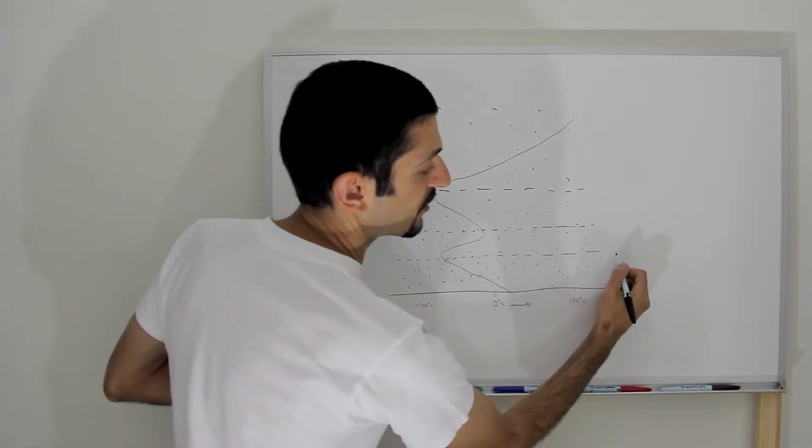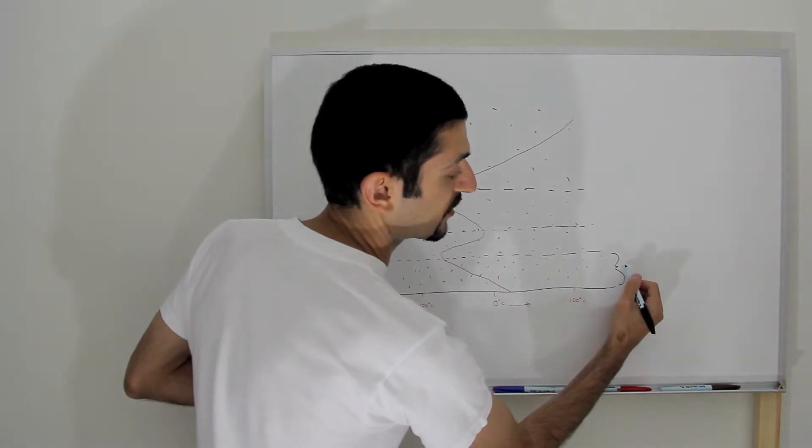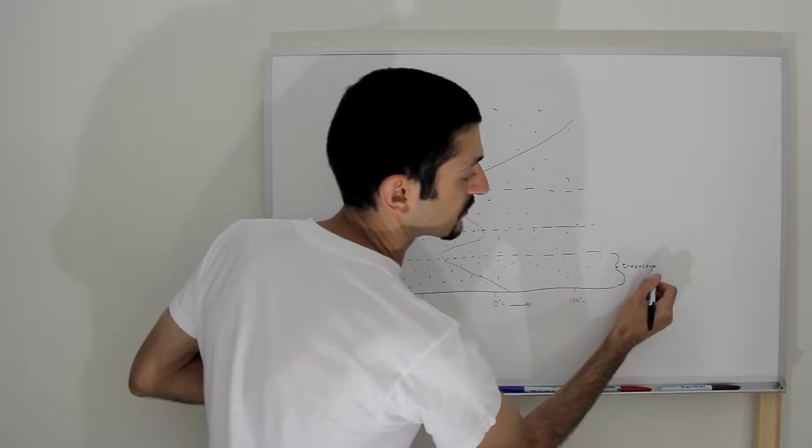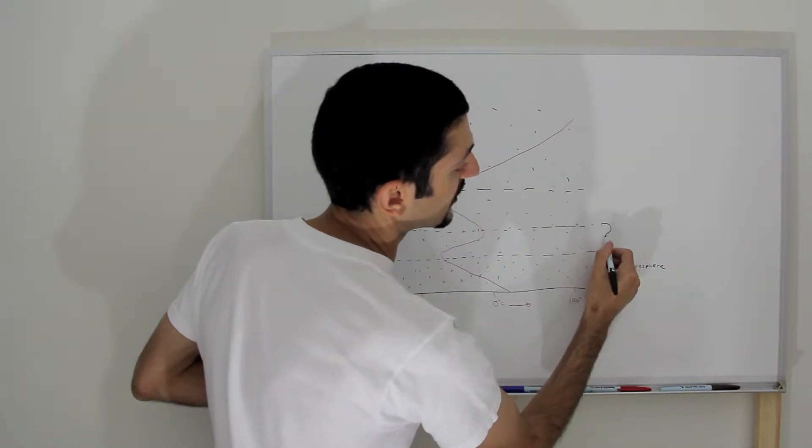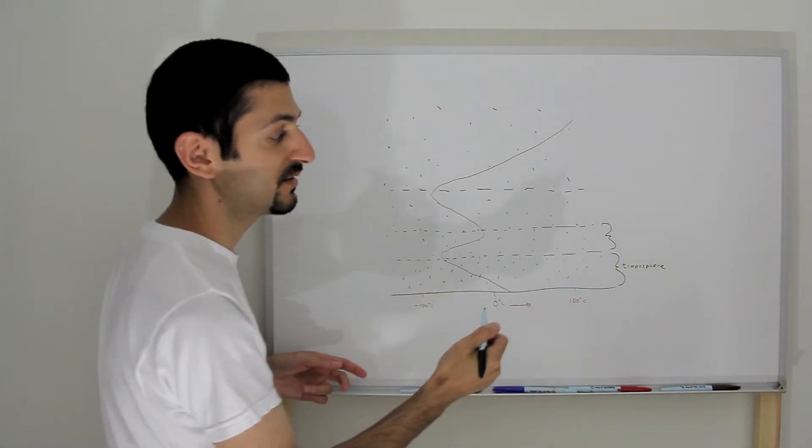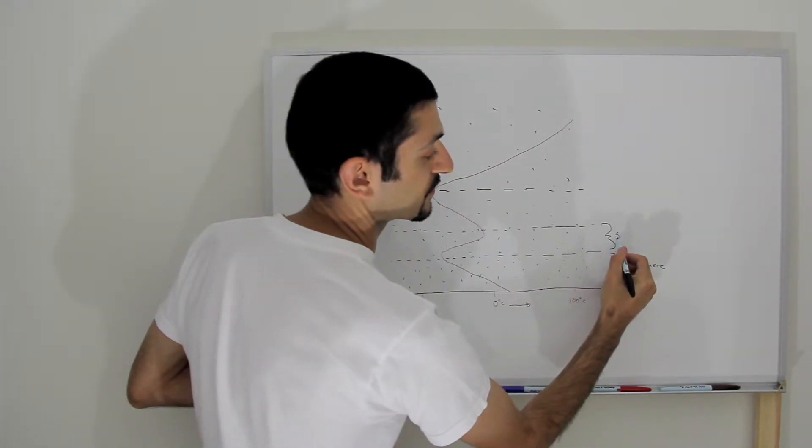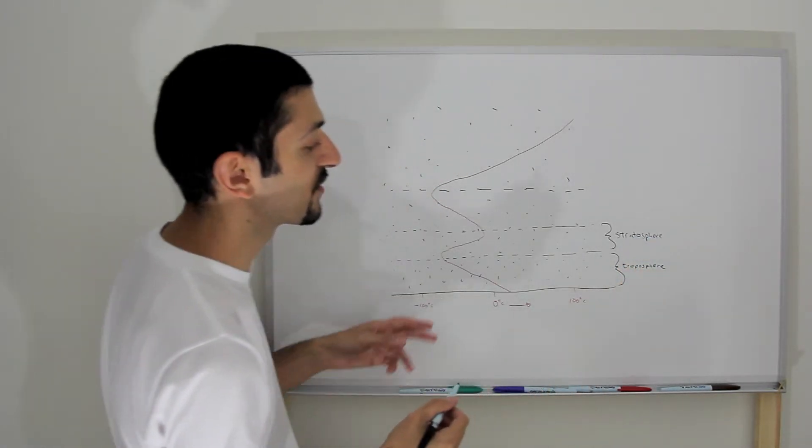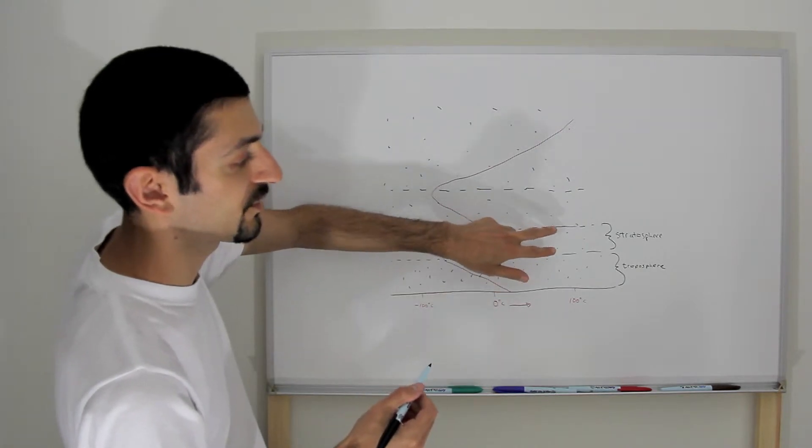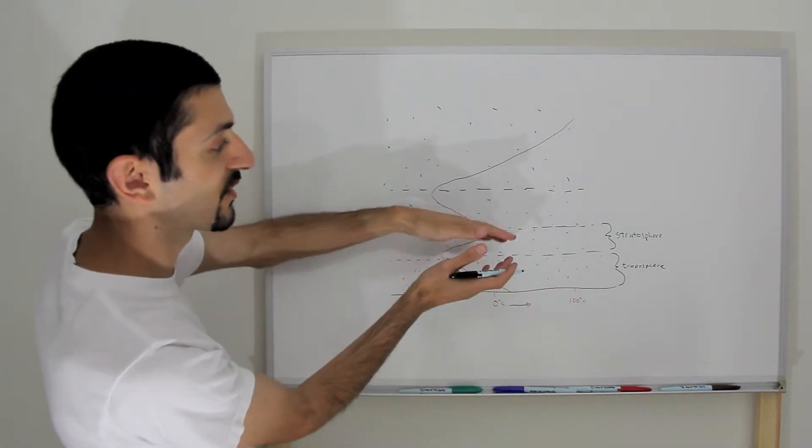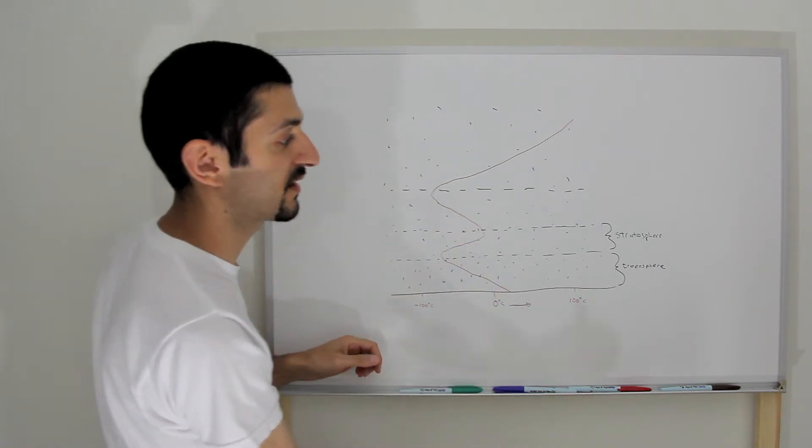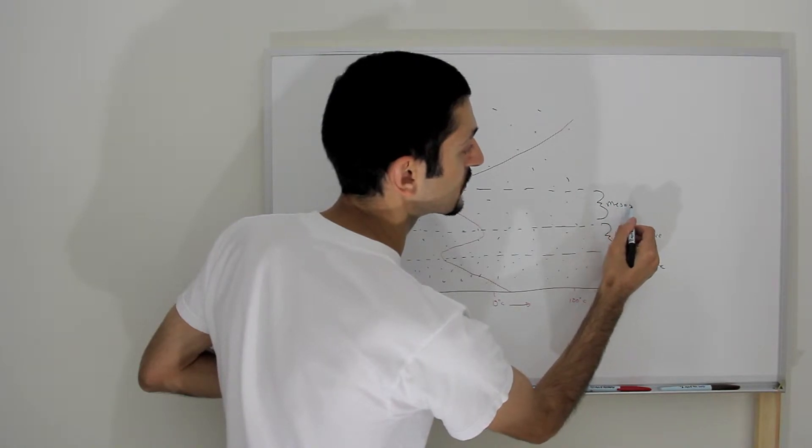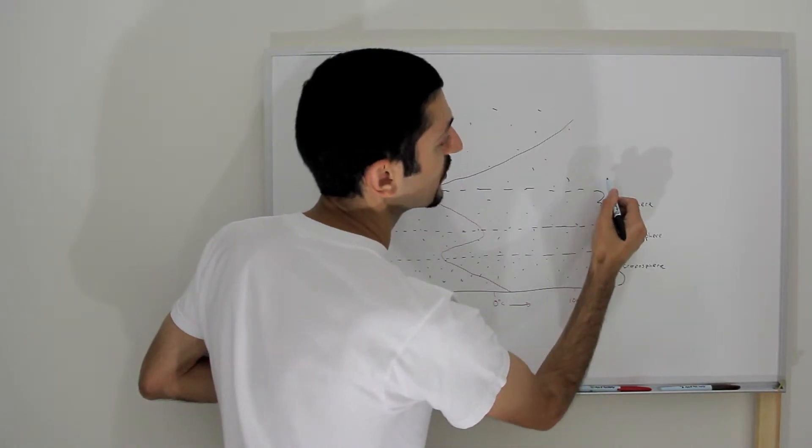So this lowest layer over here, we call it the troposphere. This second layer here, and these are not drawn to scale, is the stratosphere. Now in this depiction, the stratosphere is thinner than the troposphere, but actually each layer gets a little thicker as the air gets less and less dense. Then we get to the mesosphere, and then the thermosphere.